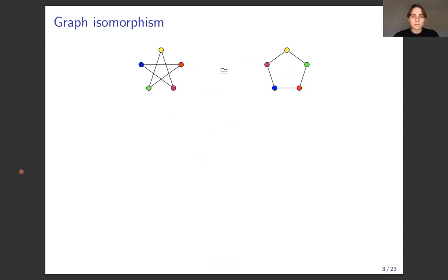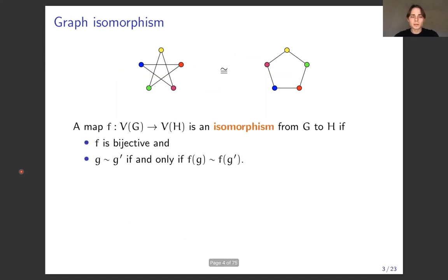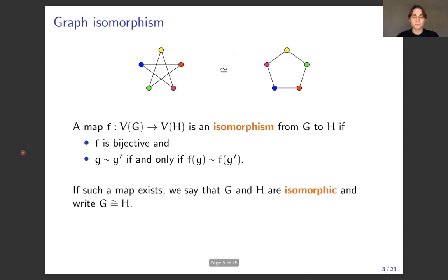Here are two graphs, and you might be able to tell by looking that they're really the same graph — they've just been drawn differently. This is what we mean essentially when we say that two graphs are isomorphic. More formally, an isomorphism is a function from the vertices of one graph to another that's a bijection and preserves adjacency and non-adjacency. Whenever an isomorphism exists we say that G and H are isomorphic.